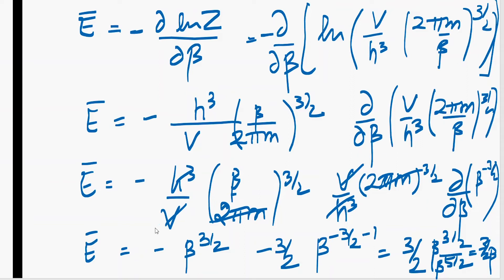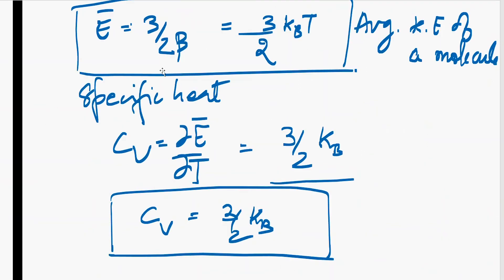We simply solve this differentiation and we get this expression: 3 by 2 beta. You can simply solve this differentiation, it is easy. You can check the answer later on. So our average energy comes out to be 3 by 2 beta.